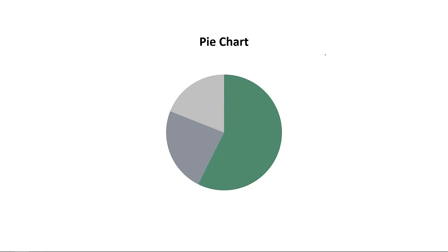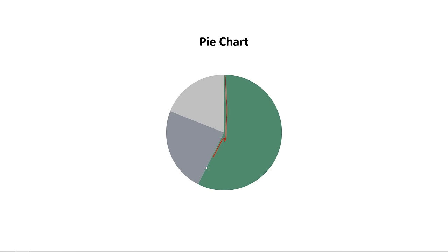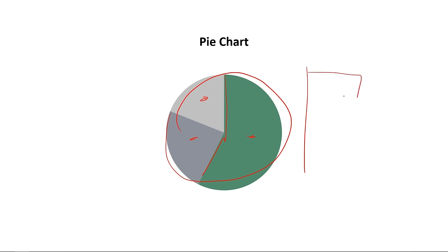The next chart I'm going to cover is a pie chart, and this is by far the most controversial chart in the data visualization world — but the truth is the pie chart does have its place when used correctly. Unlike a bar or column chart, you don't want to use a pie chart to compare categories against each other. The primary purpose is to compare a value against the total. Our brains naturally associate circles with 100%, so it's not hard to take a slice and guess roughly what percentage it is.